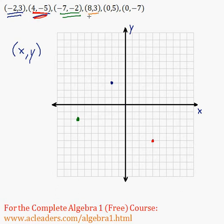What about 8 and 3? x is 8, y is 3. So again, we have a positive number for x, so we go to the right. 1, 2, 3, 4, 5, 6, 7, 8. And 3 units up. 1, 2, 3. Right here.